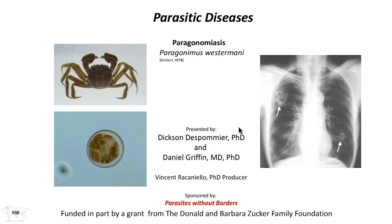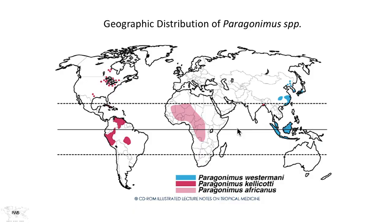Welcome to Parasitic Diseases. Today, we'll be discussing Paragonomiasis, an infection caused by Paragonimus westermani and its relatives. There are many species of Paragonimus, also known as the lung fluke, found throughout the world, and depending on the place, the species will vary.